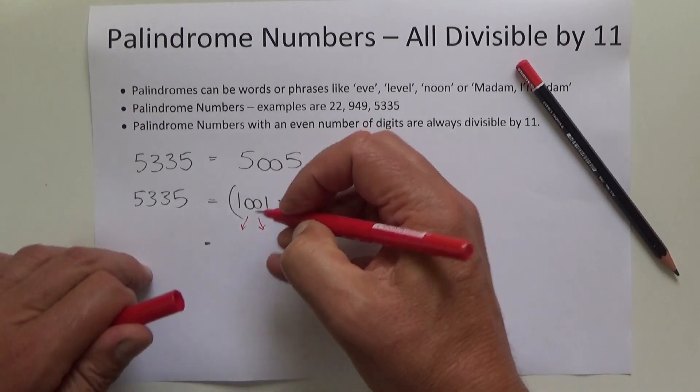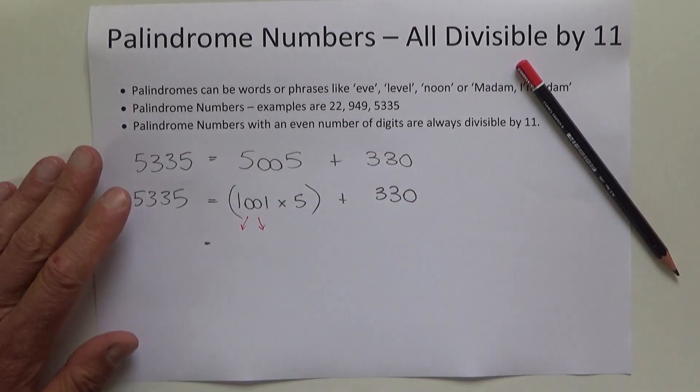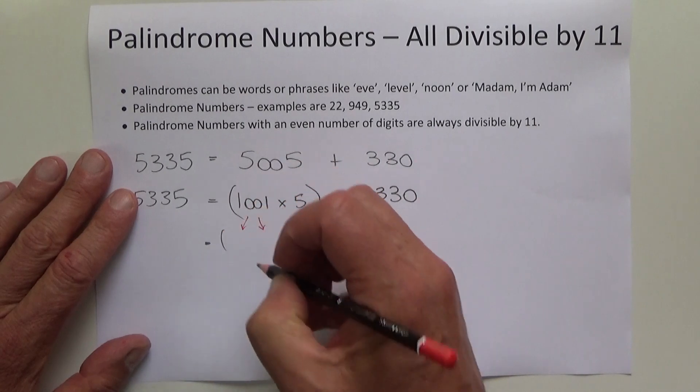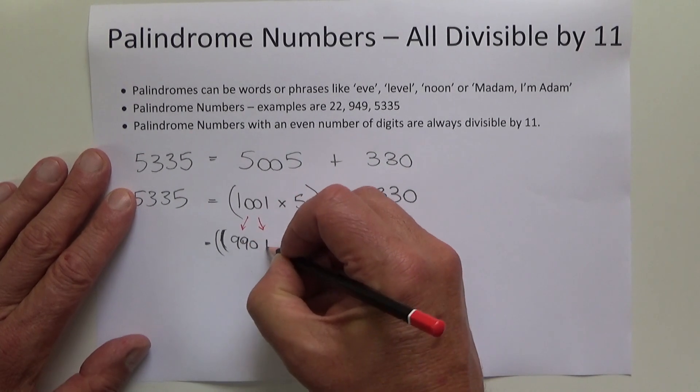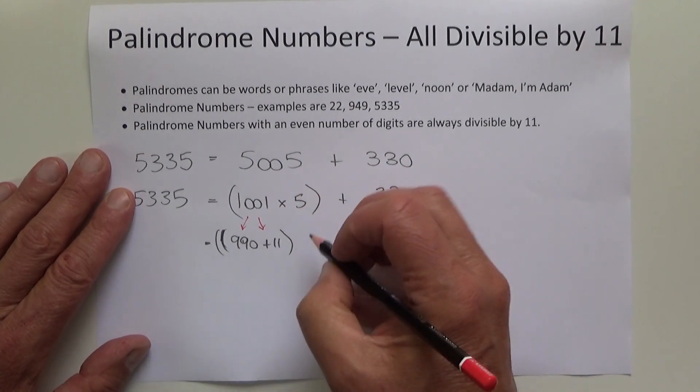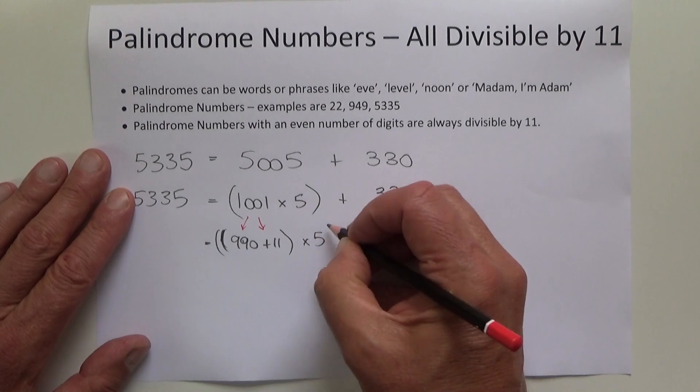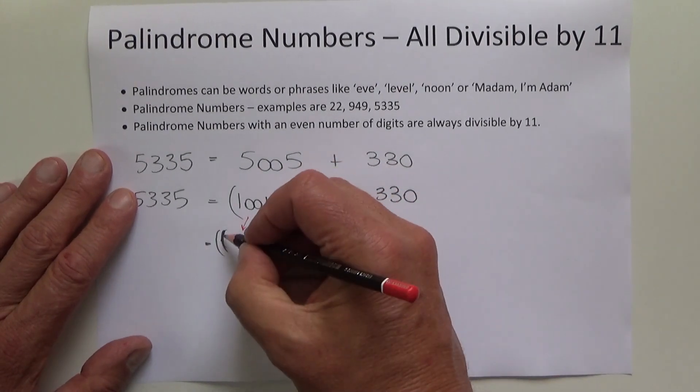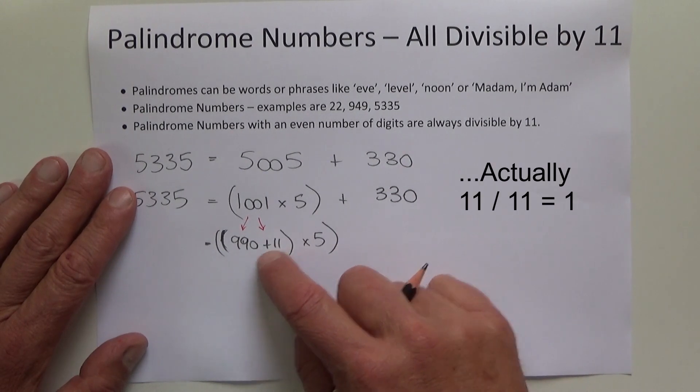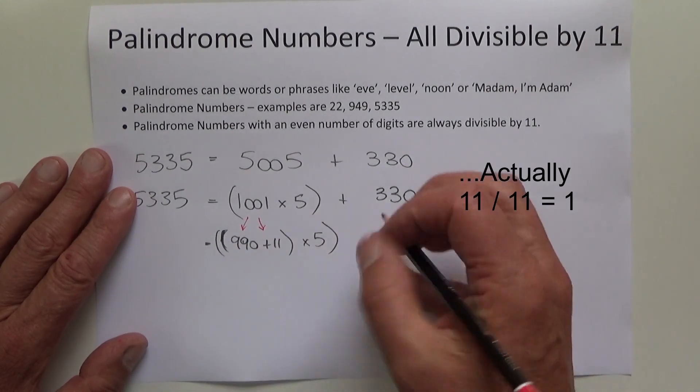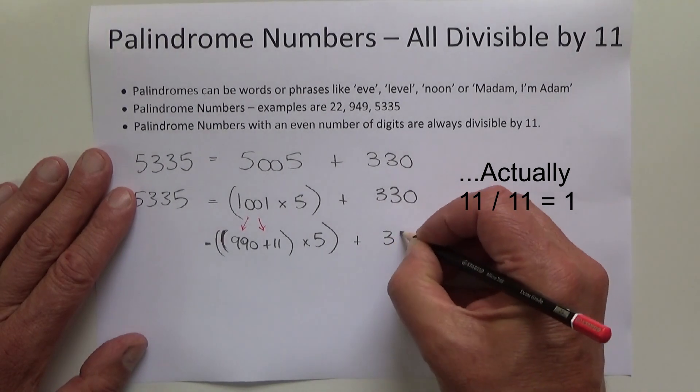If we take the 1001 and break that down into two smaller numbers, those smaller numbers can be 990 plus 11, and that's also got to be multiplied by 5. If you think about it, 990 divided by 11 is 90, and 11 divided by 11 is 1. As soon as you look at those numbers, you know instantly that they are divisible evenly by 11.